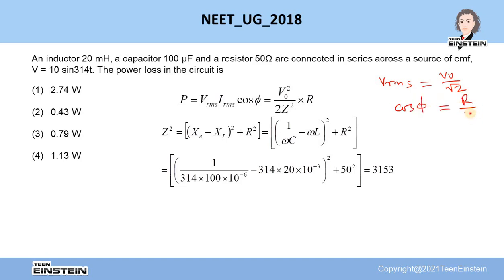So to find out the power loss in this circuit, you have to find out first of all what is Z². R is given as 50 ohm, V₀ is given as 10 volt, so the only thing is that you have to find out Z².